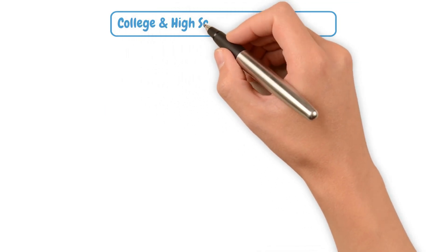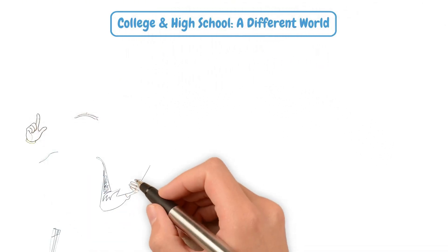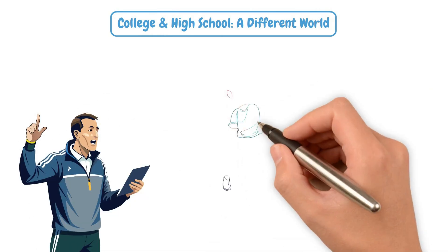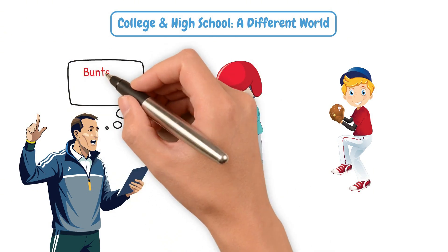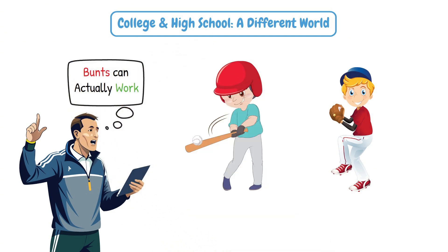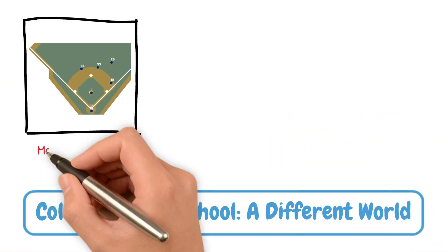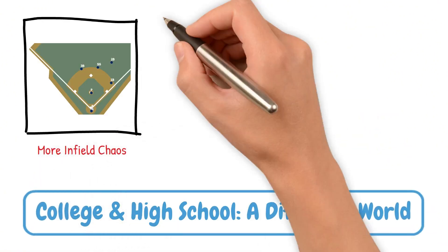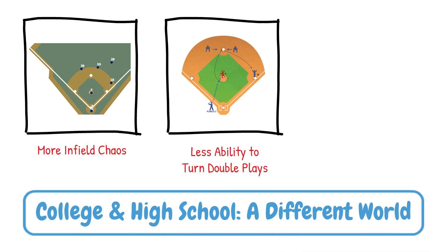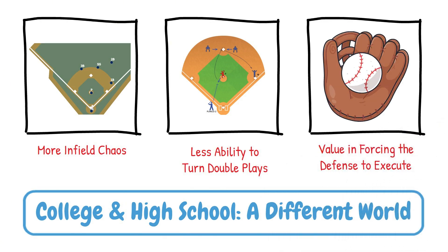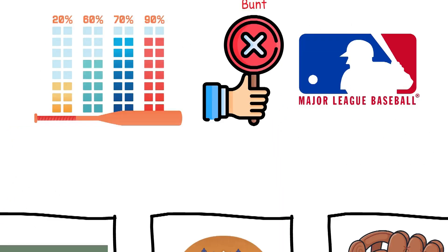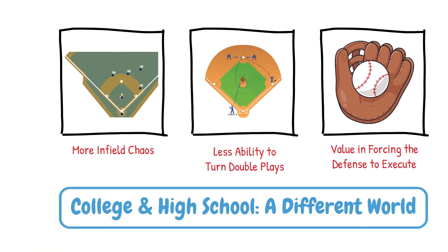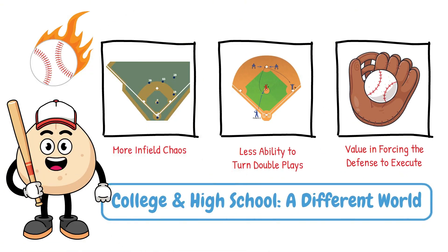The college and high school level are a different world. At lower levels of the game, your defense isn't as reliable, pitchers are less consistent, and bunts can work a little more often. In high school or college, you might see more infield chaos, less ability to turn double plays, and value in forcing the defense to execute. While our data says don't bunt in the majors, context matters. In amateur ball, a well-executed bunt can still flip a game — though I wouldn't make it your entire offensive philosophy.